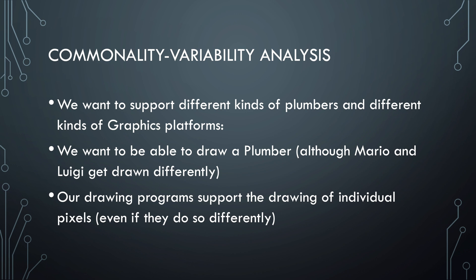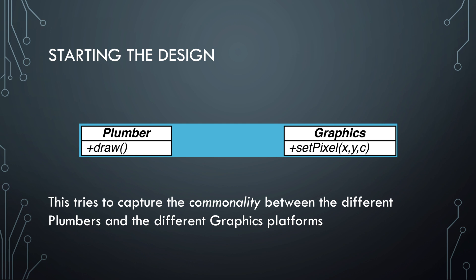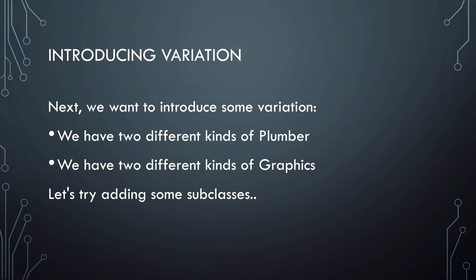What are the variations? The first variation is that we want to support different kinds of plumbers. The second one is that we want to support different kinds of graphics platforms. We want to be able to draw the plumbers, and the graphics platform supports drawing individual pixels. So for both plumbers and graphics platforms, we can identify what the commonalities are. Plumbers can be drawn regardless of whether it's Mario or Luigi. And graphics platforms allow you to set pixel colors regardless of whether it's for iOS or Android. These two abstract classes — plumber and graphics — capture exactly these commonalities. So next, let's add variation to these commonalities by defining subclasses for different kinds of plumbers and graphics platforms.